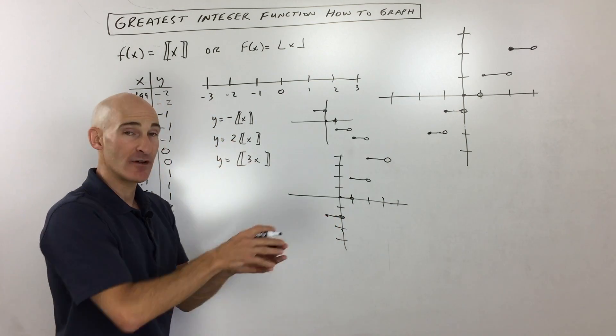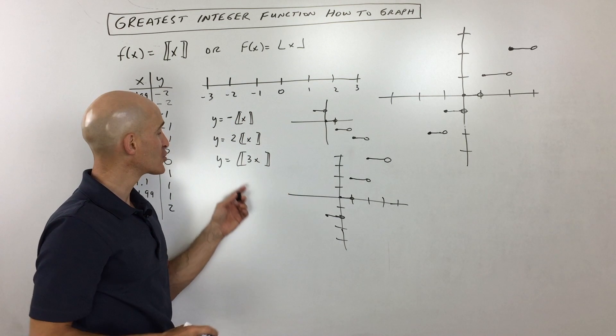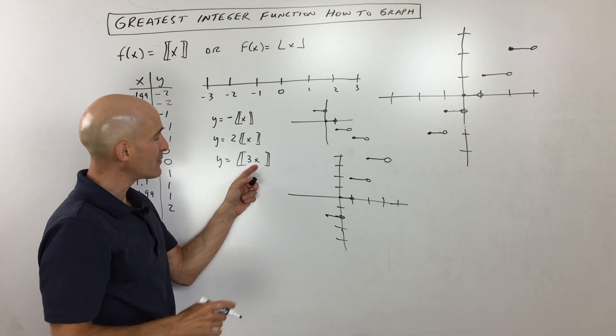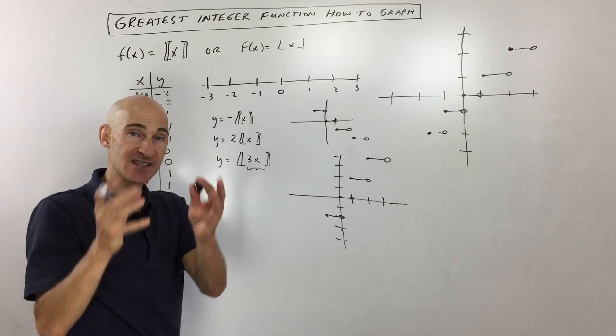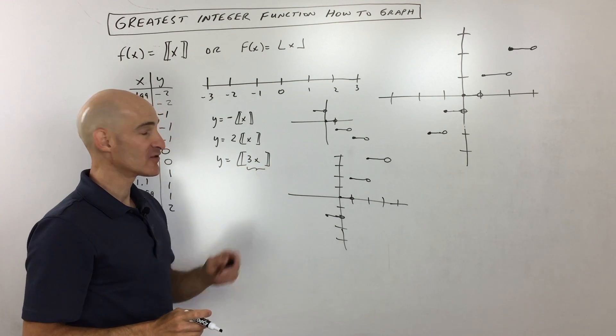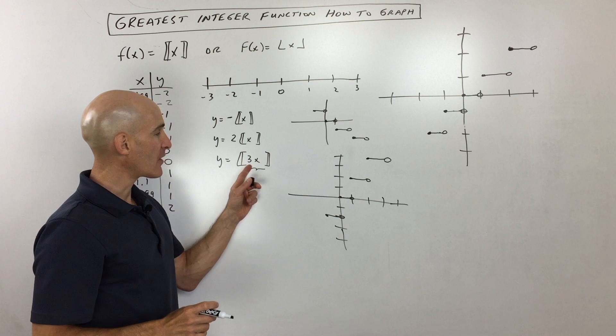Now what do you think this 3 does to the graph right here? Notice this grouped with the x that's inside of those brackets, those greatest integer brackets. What do you think that 3 does to the graph? Now if you said that it's going to compress it horizontally, you're absolutely right.